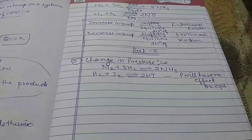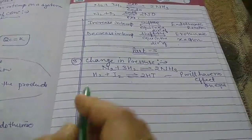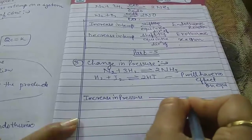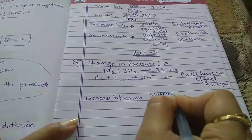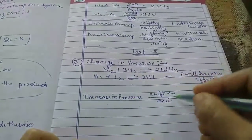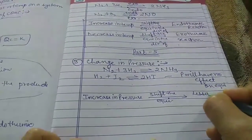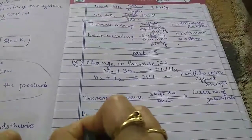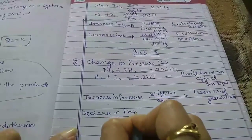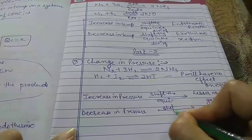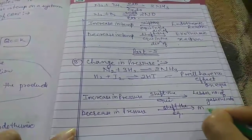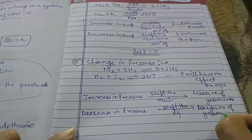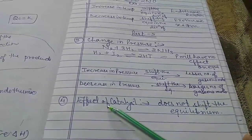To summarize the effect of pressure: an increase in pressure shifts the equilibrium towards the lesser number of gaseous moles. A decrease in pressure shifts the equilibrium towards the larger number of gaseous moles.